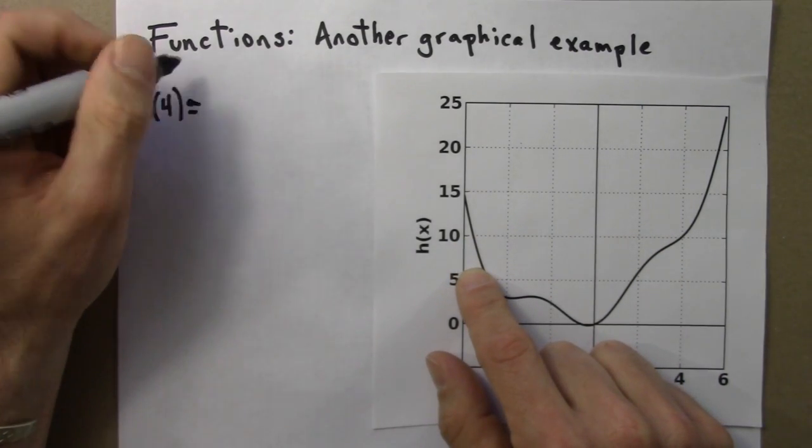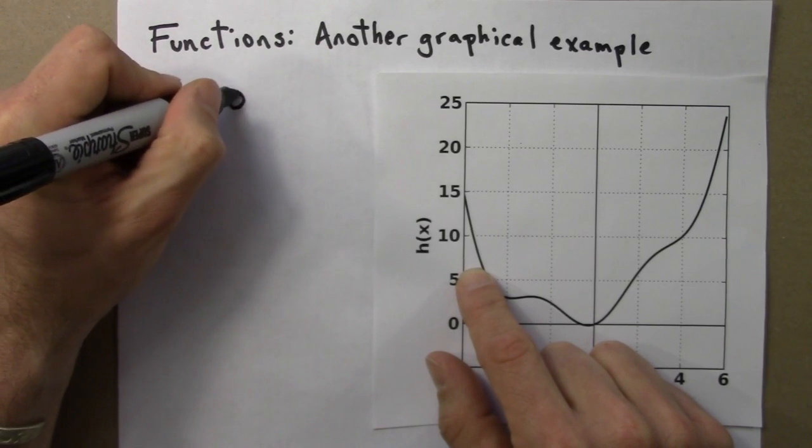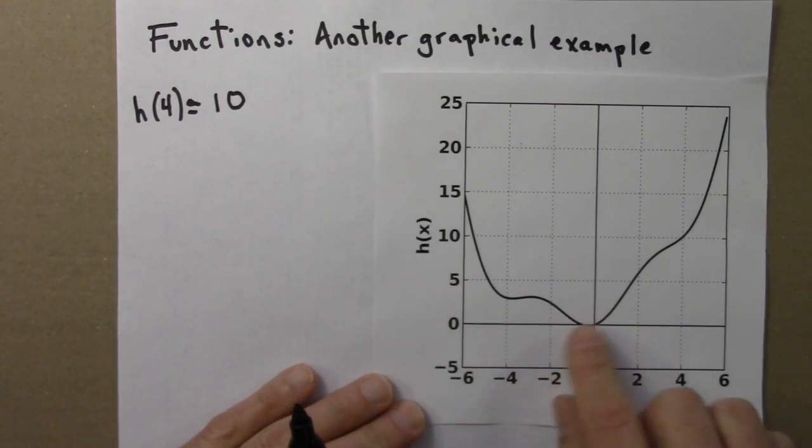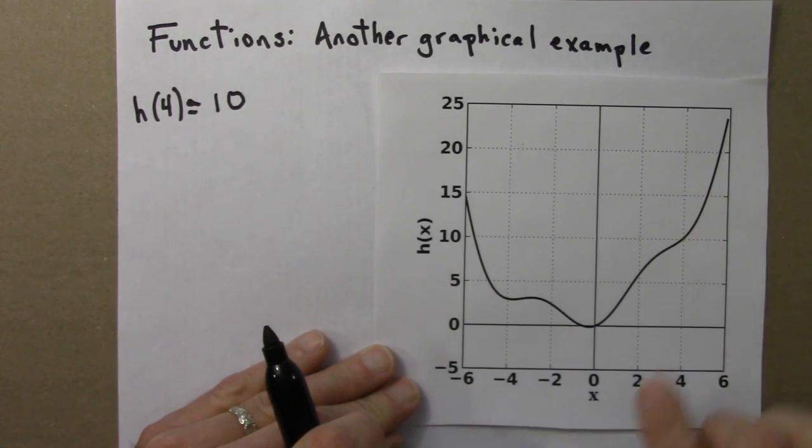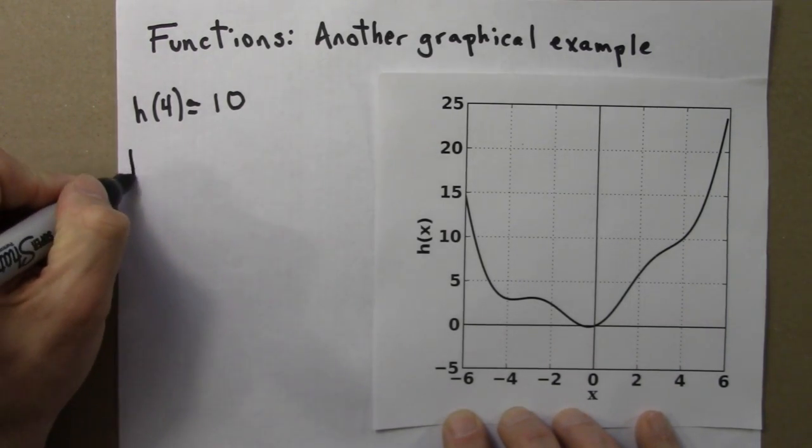So h(4) is around 10. And I could put a squiggly equal sign there to indicate that it's an approximation. Maybe the curve doesn't exactly go through 10. I can't tell, but that's okay. Let's do a few more points.